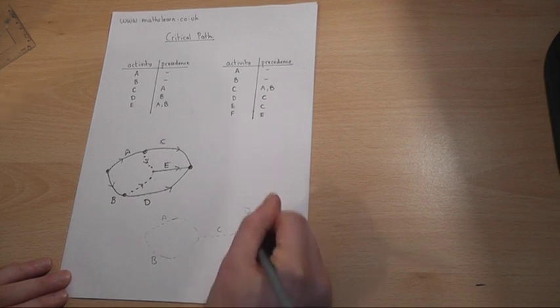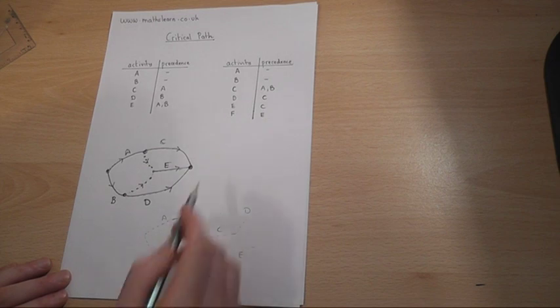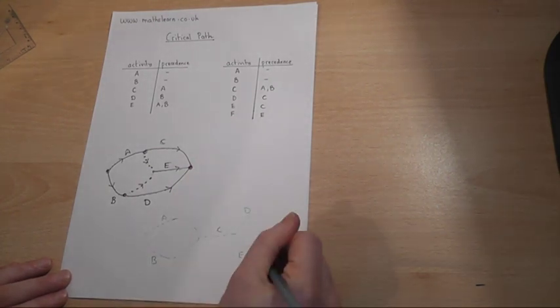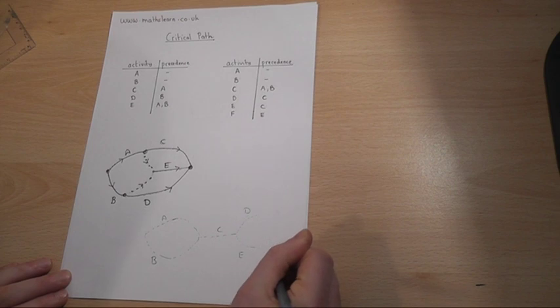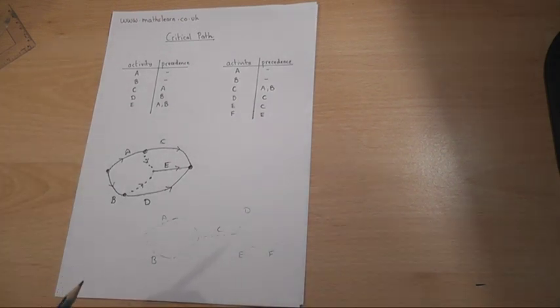So there's D and there's E, but F comes after E, so F goes like so. Now we then make the whole thing formalized.